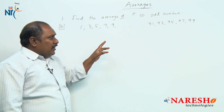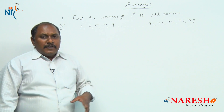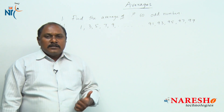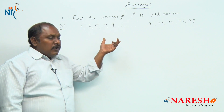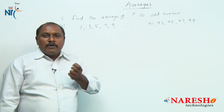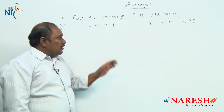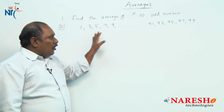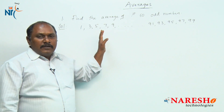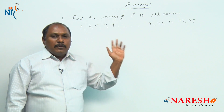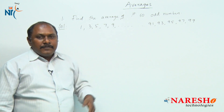Now there are different ways to answer this particular question. The first way: generally we know average is sum of observations by number of observations. So add all these values from 1, 3, 5 till 99 and divide by the number of values, that is 50.